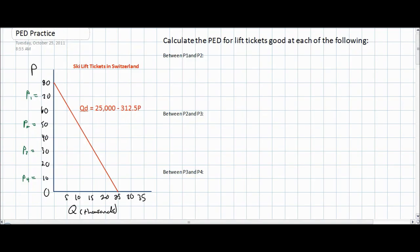Hello everybody. For this video lecture we're going to be doing some practice with price elasticity of demand. Because it's the beginning of a new ski season here in Switzerland, I thought we'd look at the market for ski lift tickets in Switzerland. In this market the demand for ski lift tickets can be expressed using the equation QD equals 25,000 minus 312.5P.